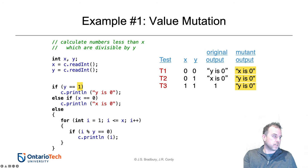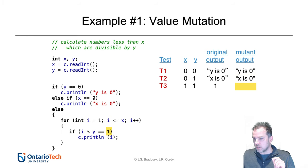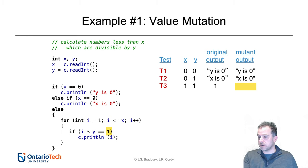We go on and do the exact same thing for each subsequent constant. For the second constant, two of the three tests have different output; for the third, one of the three tests has a different output; and for the last one, one test again has a different output. So for value mutation — dealing only with changing constants off by one — all three of our tests are able to kill one hundred percent of the mutants.